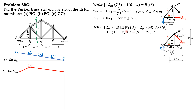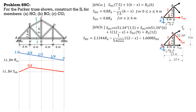So: S_BG·cos(51.34°)·1.5 + S_BG·sin(51.34°)·6 + 1·(12 minus x) + S_HG·9 = R_A·12. Dividing everything by (1.5·cos(51.34°) + 6·sin(51.34°)), we get S_BG = 2.1344·R_A − (1/5.6222)·(12 minus x) − 1.6008·S_HG. This equation for S_BG is applicable for the load moving from A to H, that is 0 ≤ x ≤ 6. Beyond that, the unit load is no longer part of the free body diagram.